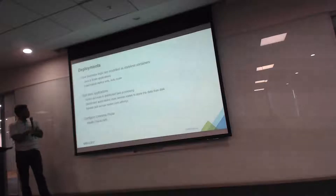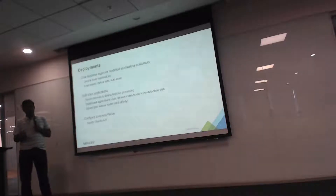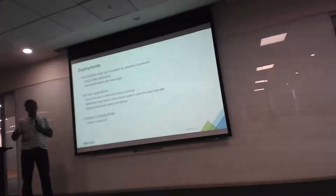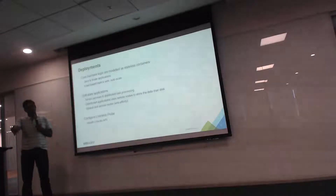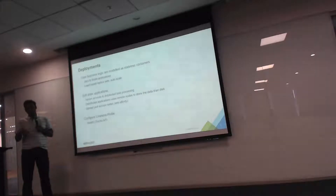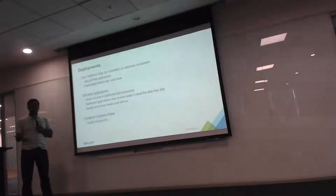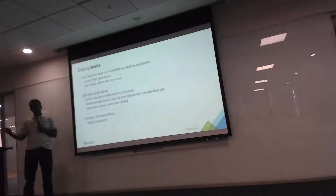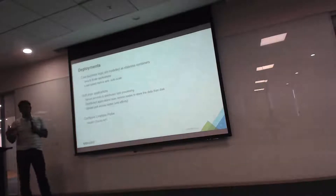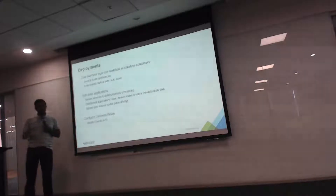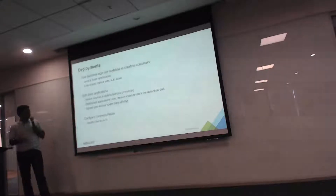For soft-state applications at startup, we know the application needs to come up with three replica sets by reading the Kubernetes config. Each container keeps waiting until all three IPs are available. Once we get all three IPs, we pass them to MongoDB or Xenon so it can form its own quorum. That is the approach we use.